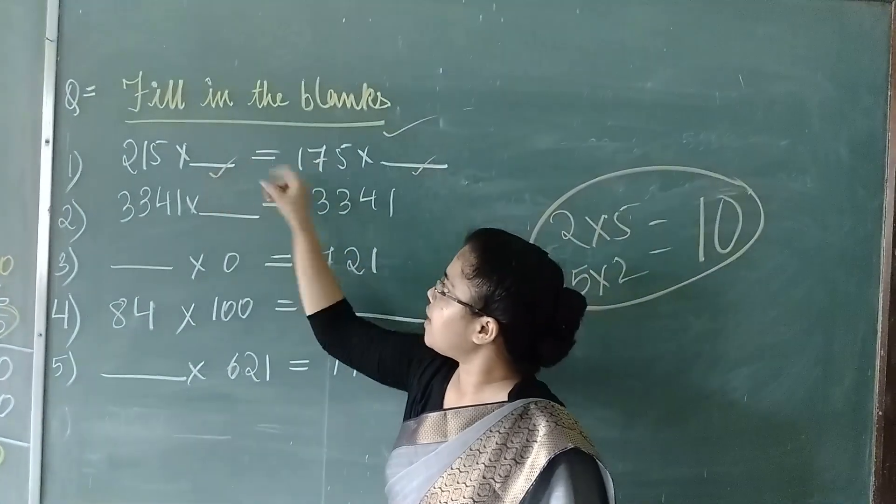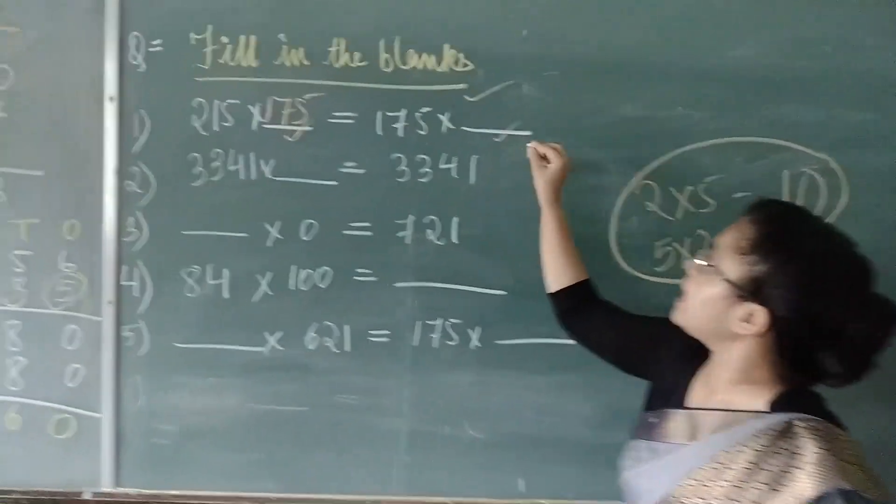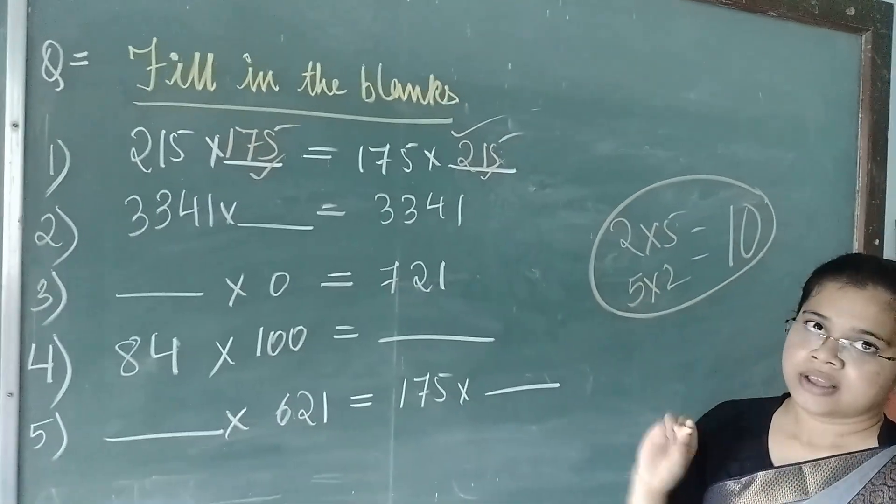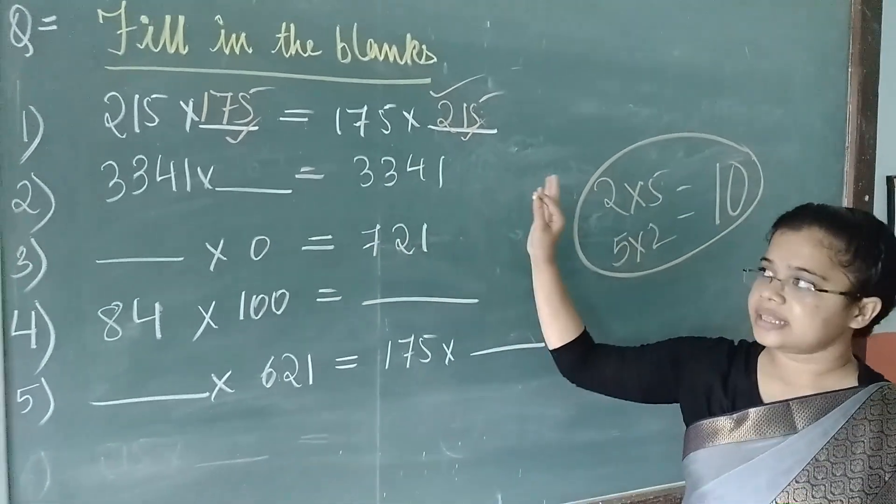This side, 175 is missing and this side, 215 is missing. So, without actual calculation, we can easily fill up these blanks.